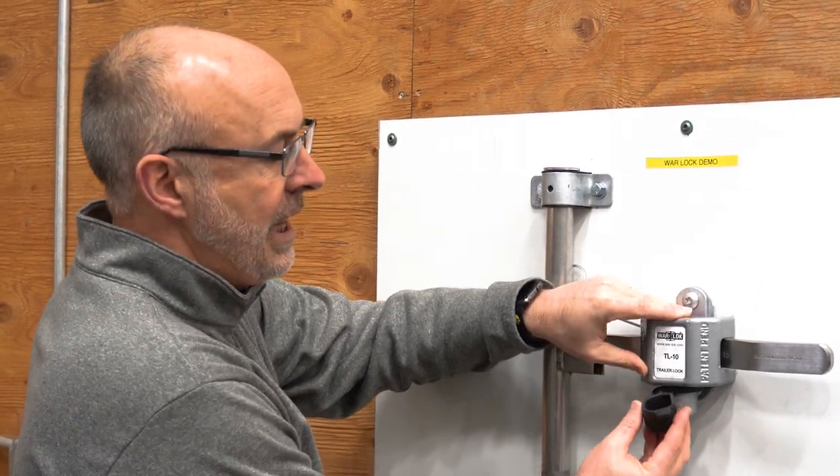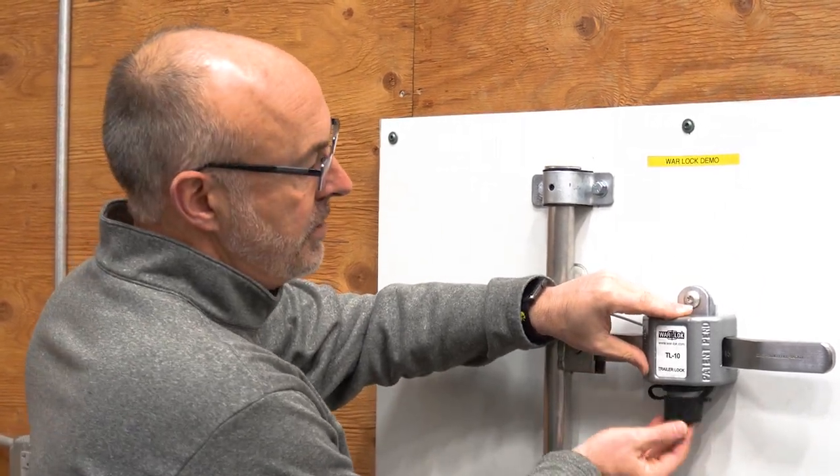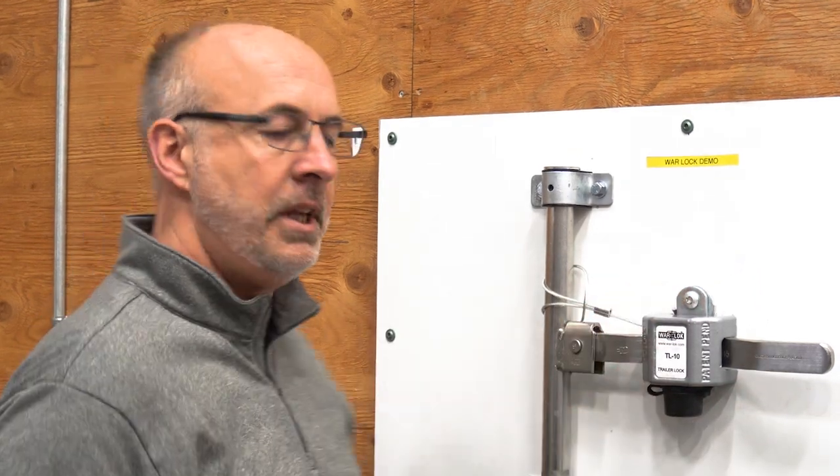Lastly, the black cap goes on to protect the lock. This protects it from the elements: sand, gravel, snow, and ice. That is how you properly install a Warlock.